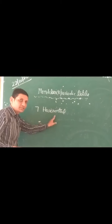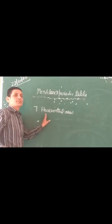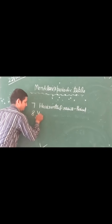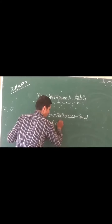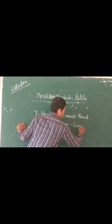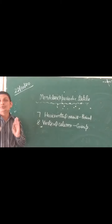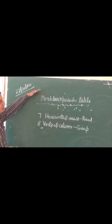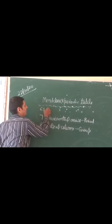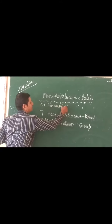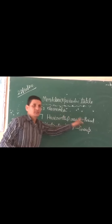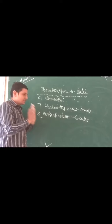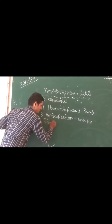In Mendeleef's periodic table, there are 7 horizontal rows known as periods and 8 vertical columns known as groups. Mendeleef arranged all the then-known elements in increasing order of their atomic masses. When Mendeleef prepared this periodic table, only 63 elements were known at that time.